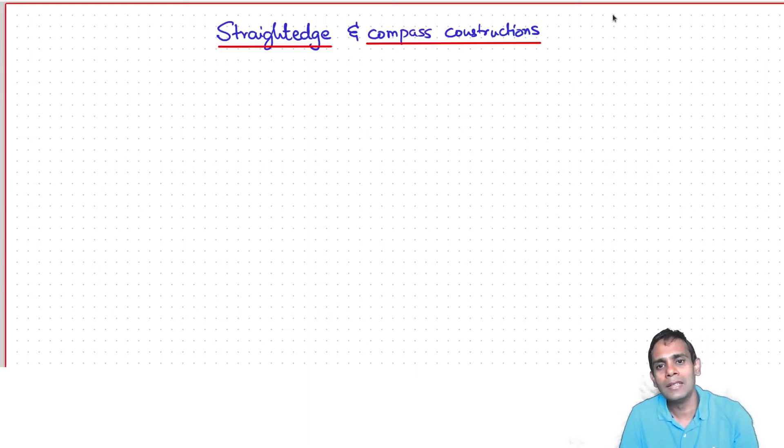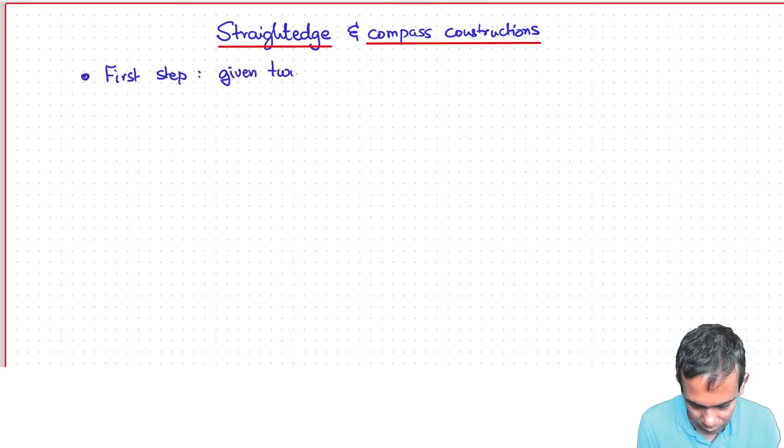Now a straightedge and compass construction is a series of steps. So the first step is always that you're given two points, and I'll call these points constructed points.